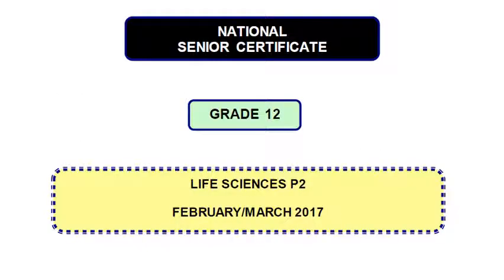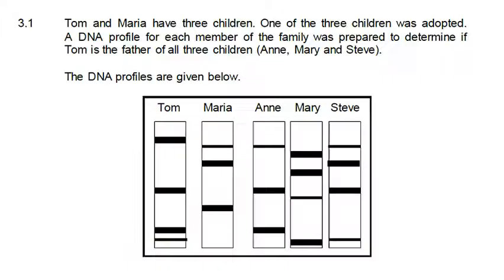Our first question comes from the Life Sciences Paper 2, February-March 2017, question 3.1. Tom and Maria have three children. One of the three children was adopted. A DNA profile for each member of the family was prepared to determine if Tom is the father of all three children. We have Mary, Anne, and Steve, and the DNA profiles are given.